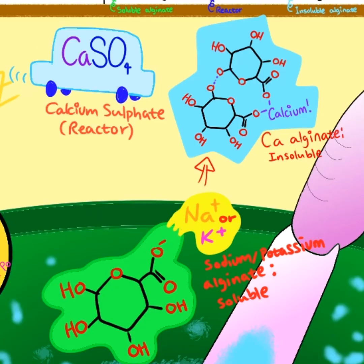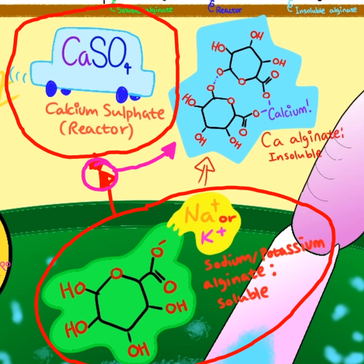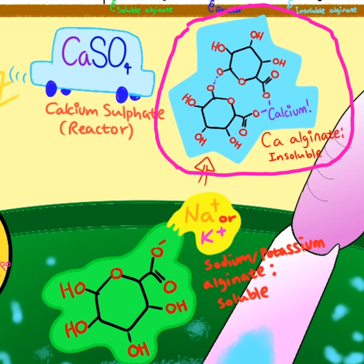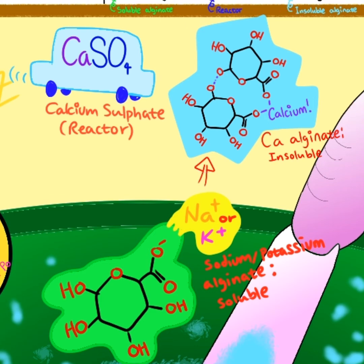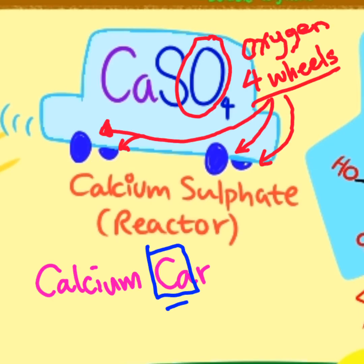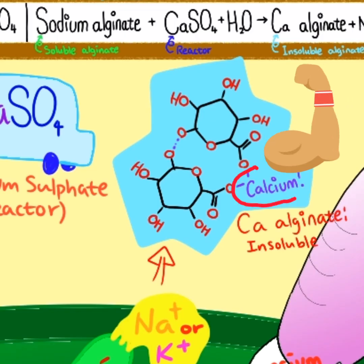Soluble alginate reacts with the reactor, which is calcium sulfate, to form insoluble alginate. I memorized it by thinking of a calcium car with four fills from sulfate. This calcium car makes alginate strong like a bone.